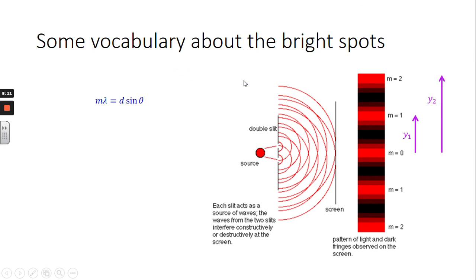So, our equation is m lambda equals d sine theta. M equals 0 is what we call the zeroth order or central bright spot. M equals 1 is what we call the first order bright spot. M equals 2 is the second order bright spot.